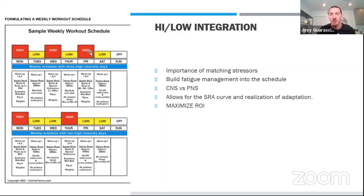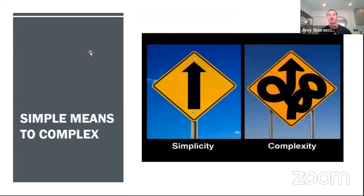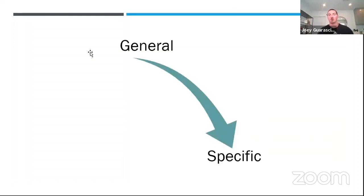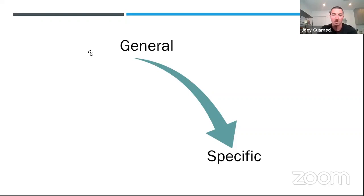When looking at any exercise, we start simple and move to complex. As we move through the continuum, the exercise modality will change — whether through volume prescription, intensity prescription, or variation in the exercise itself. Similarly, we move from general to specific, as specific as we can be in the weight room. We're never going to exactly mimic the sport movement itself, but we try to mimic properties that enhance that specific movement.